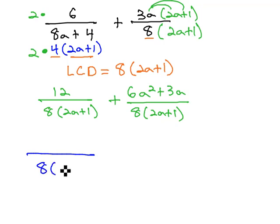We finally have a common denominator of 8, times 2a plus 1, so we simply have to add the numerators. With no like terms, we have 6a squared, plus 3a, plus 12.